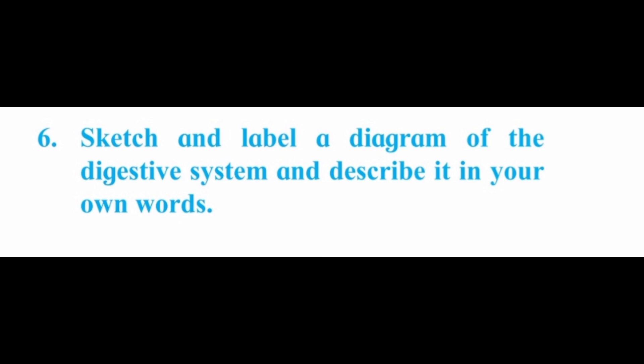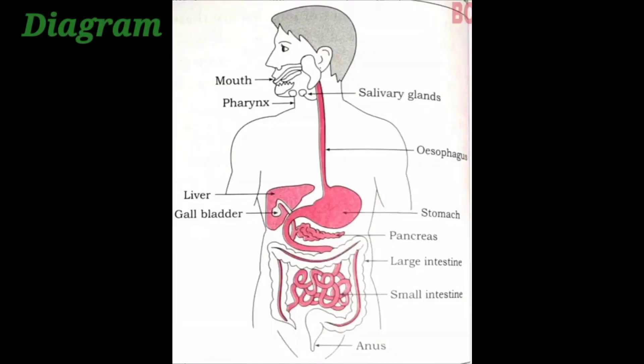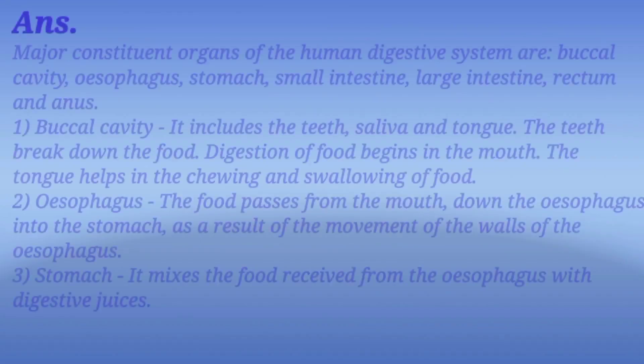Question number six: sketch and label a diagram of the digestive system and describe it in your own words. So this is the answer for it. Students, do subscribe to our channel for more videos and share it with your friends.